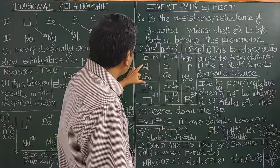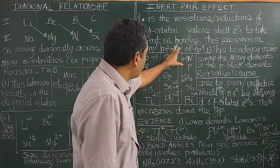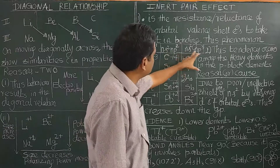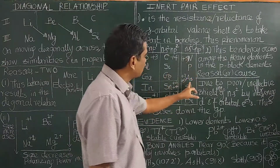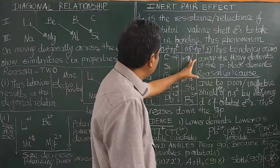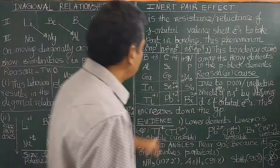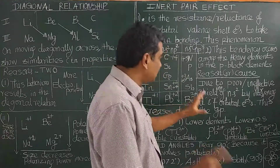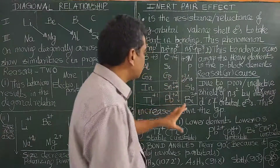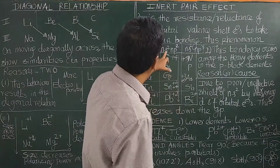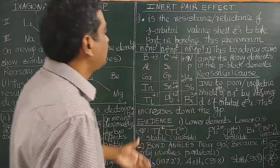In the P-block: ns²np¹ is the boron family — boron, aluminium, thallium. ns²np² is the carbon family — carbon, silicon, germanium, tin, lead. There are 4 valence electrons. The nitrogen family has 5 valence electrons — nitrogen, phosphorus, arsenic, antimony, bismuth. For example, nitrogen shows +5 and +3 oxidation states, both stable. Whereas in bismuth, only +3 is stable; +5 is unstable — because of the reluctance of S orbital valence electrons to take part in reaction. This phenomenon is called the inert pair effect.